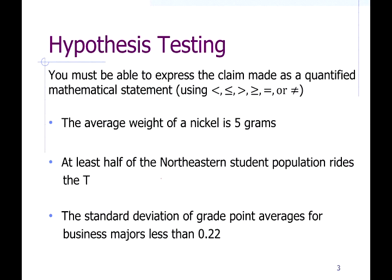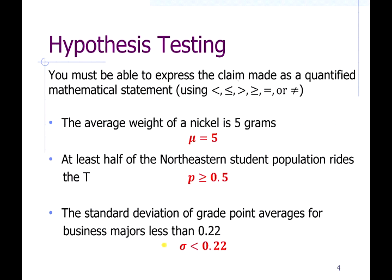We start with a claim being made about a population, and we want to write that claim symbolically using equal to, not equal to, or an inequality symbol. For example: the average weight of a nickel is five grams, so mu equals five. At least half of the Northeastern student population rides the T, so the proportion is greater than or equal to 0.5. The standard deviation for GPAs is less than 0.22.